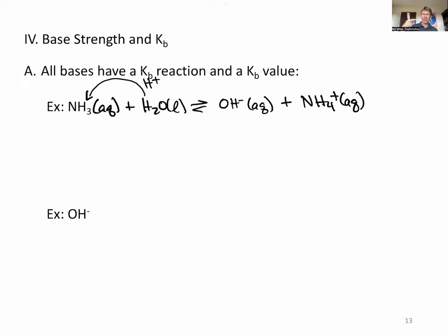Then if we do the reaction backwards, we transfer an H+ from the ammonium NH4+ to the OH- to make the water. We have two conjugate pairs: a conjugate acid, conjugate base, conjugate base, conjugate acid.